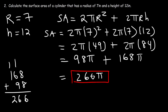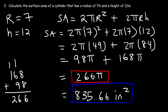So 266 pi is the exact answer. If you want to round to the nearest hundredth using the exact value of pi — not 3.14 — it's 835.66 square inches. When dealing with volume, units are cubed (cubic inches, cubic centimeters), but when dealing with area or surface area, units are squared (square inches, square feet, square centimeters, etc.). So you can write the answer in either form.